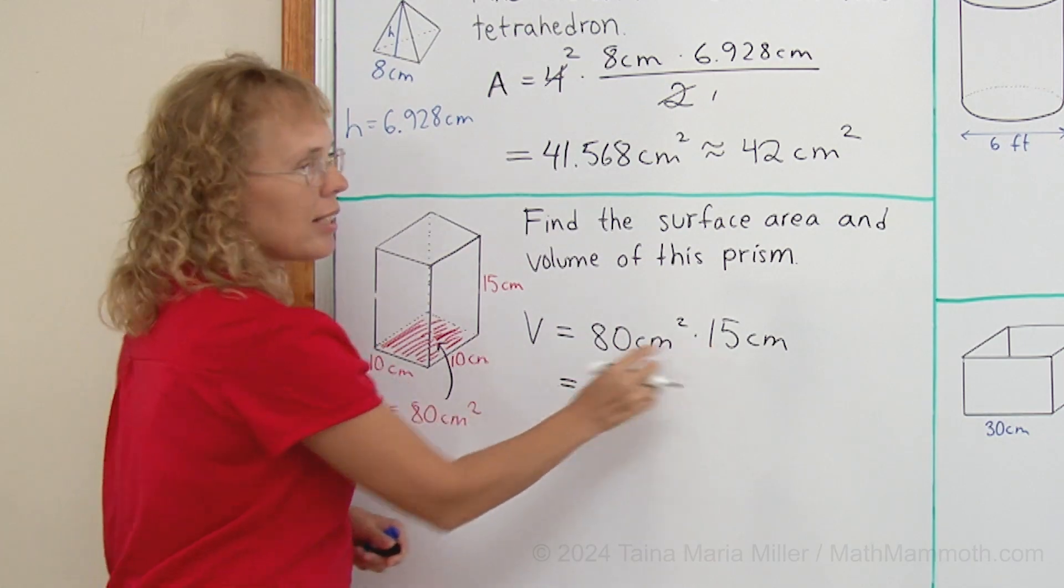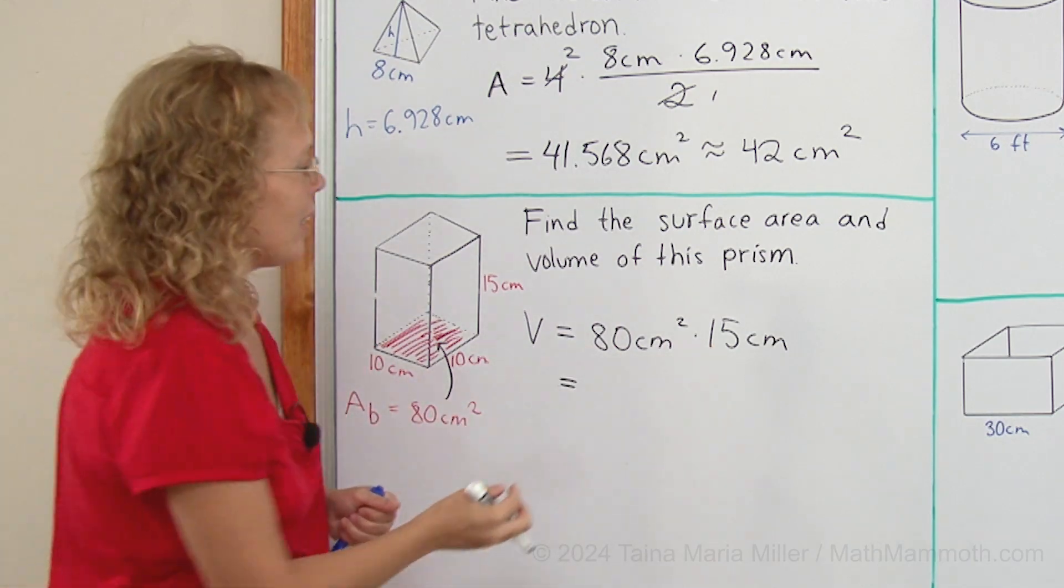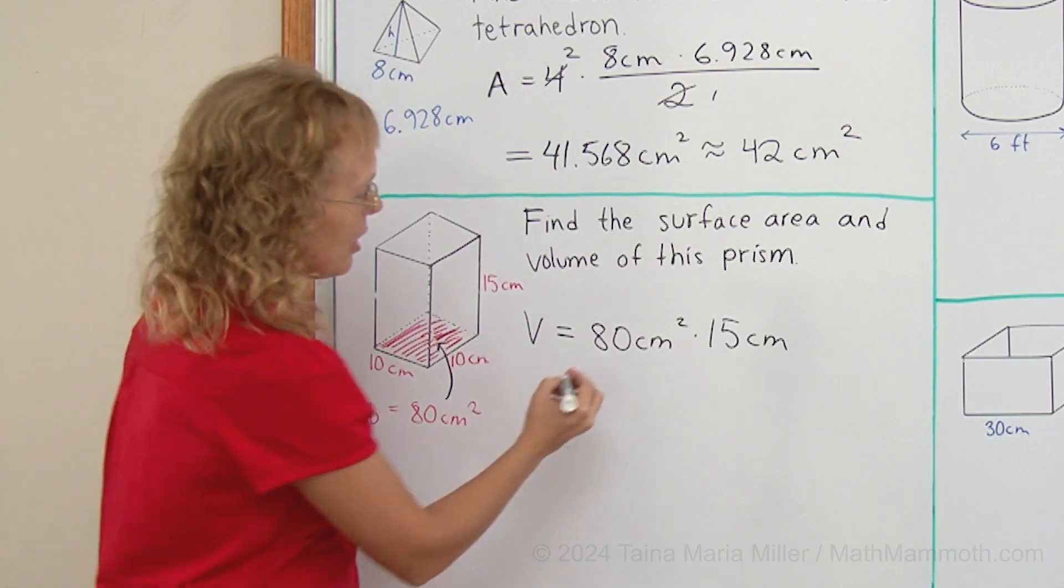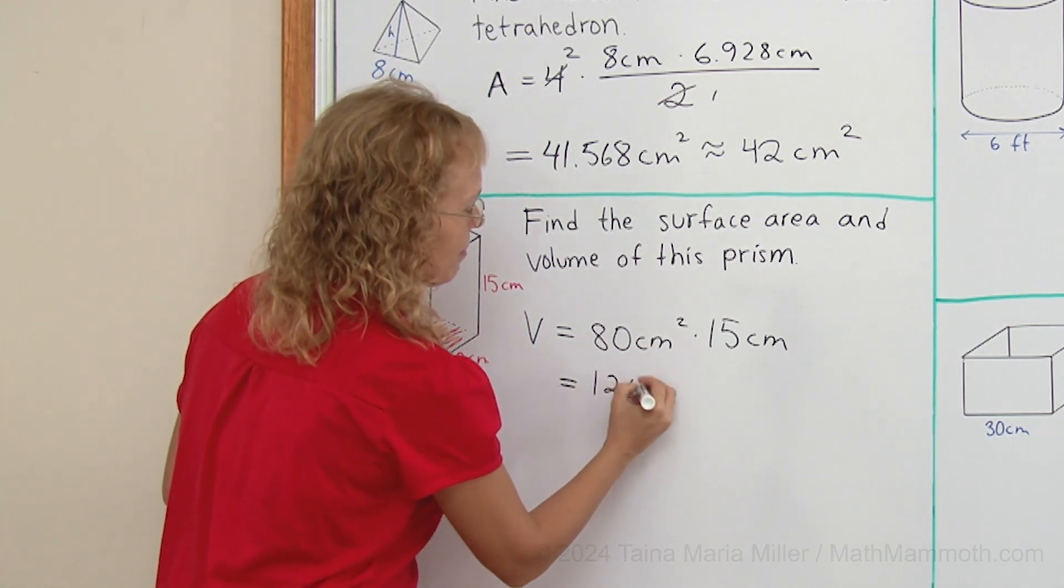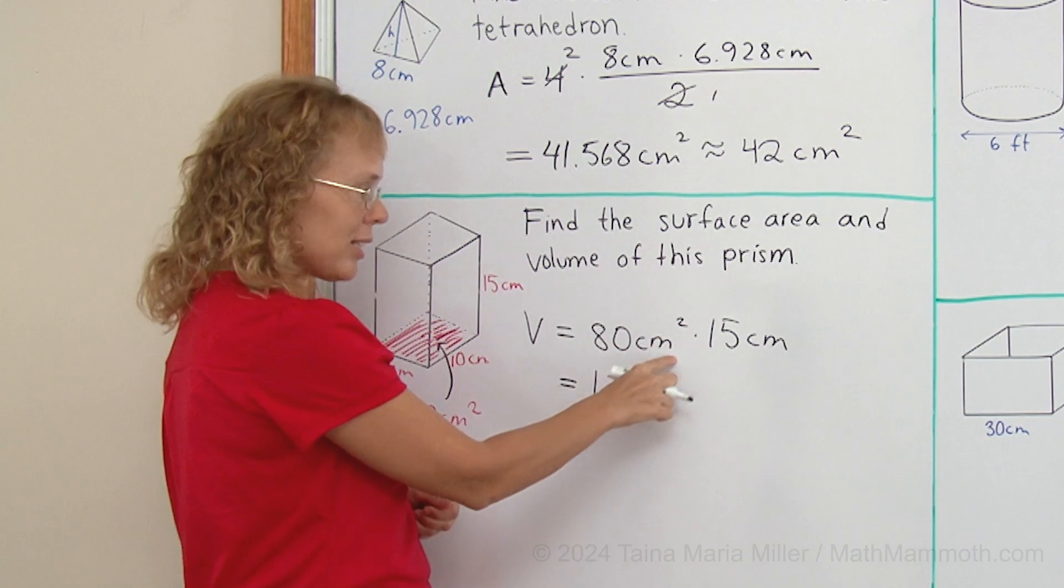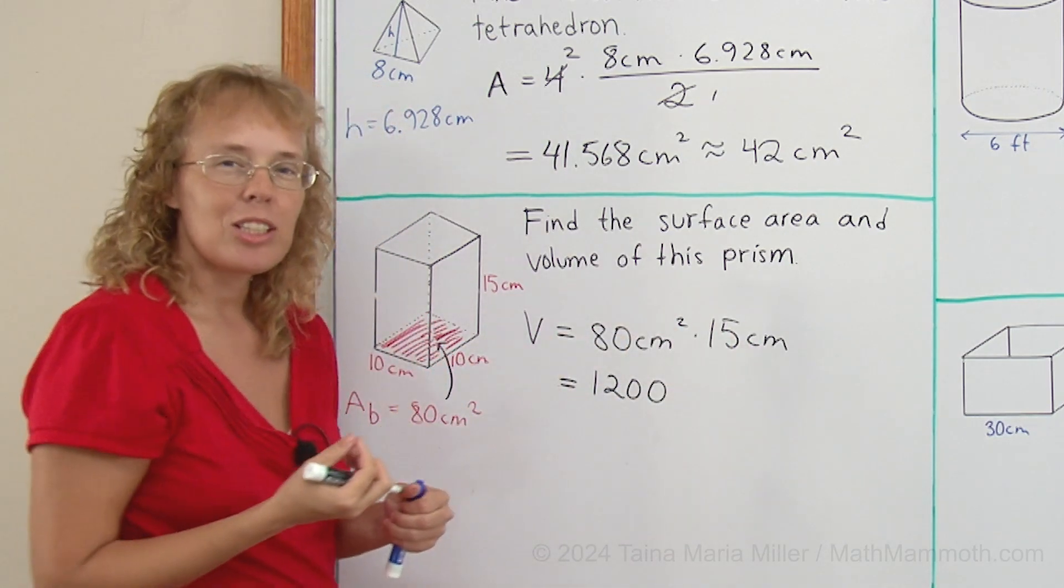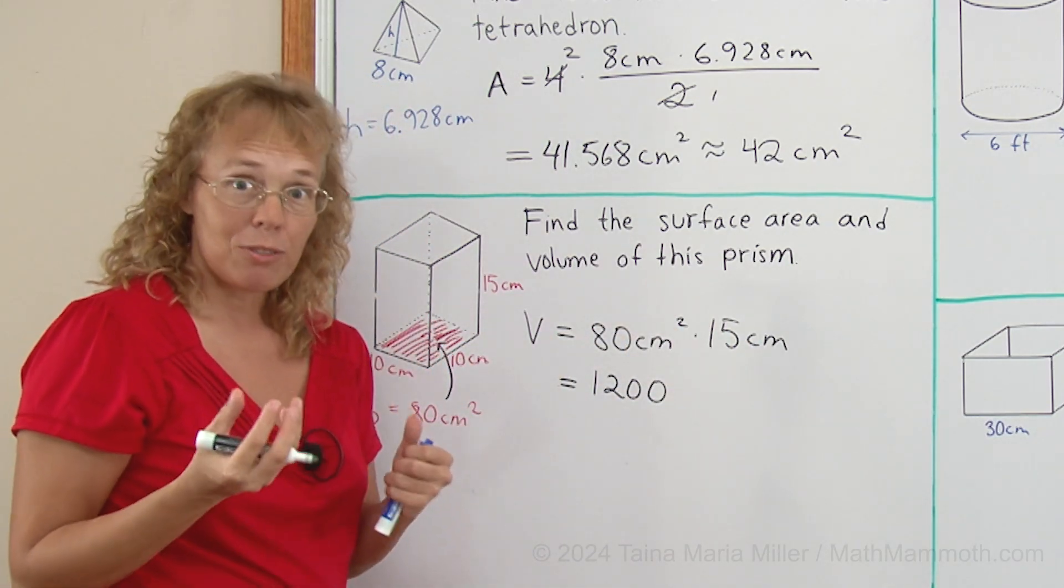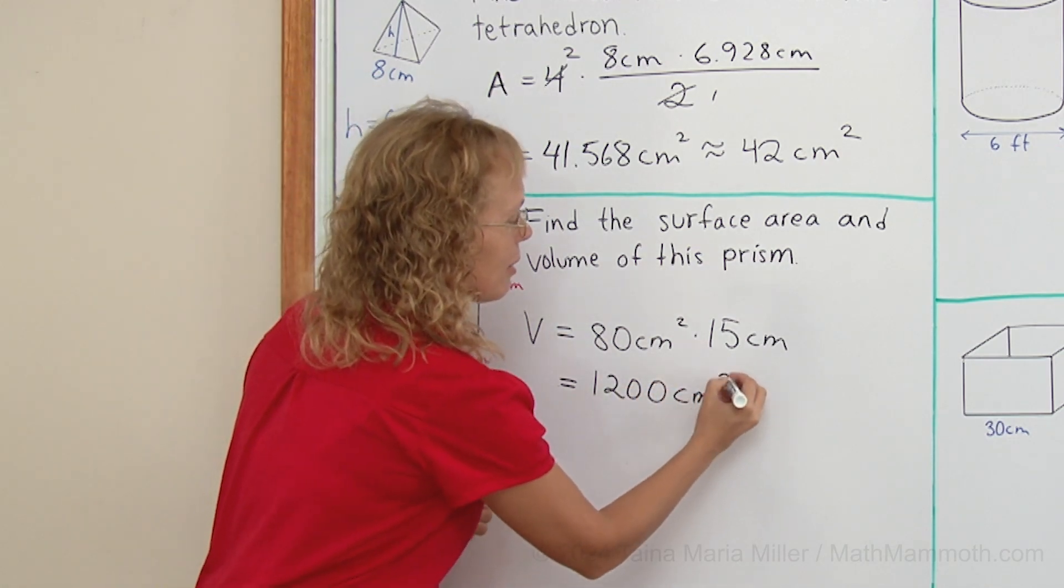Okay, 80 times 10 would be 800. And so we take 800 one and a half times. So we get 1200. And now square centimeters times a centimeter would give us a unit for volume, which will be cubic centimeters.